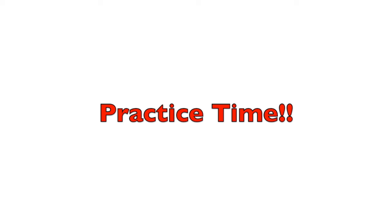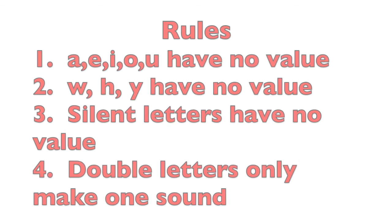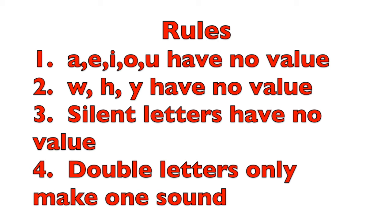That information is all you'll really need, except for a few rules. The vowels A, E, I, O, and U have no value whatsoever. Just as W, H, and Y — the so-called old vowels — also have no value; you can use them freely. Silent letters have no value because they make no sound. And lastly, double letters only make one sound.